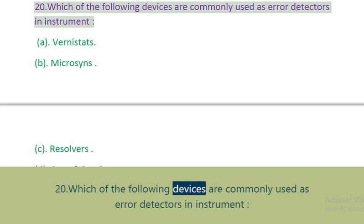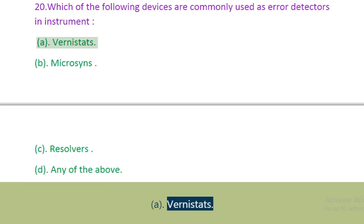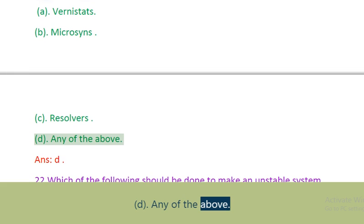Question 20: Which of the following devices are commonly used as error detectors in instruments? A. Vernistats. B. Microsins. C. Resolvers. D. Any of the above. Answer: D.